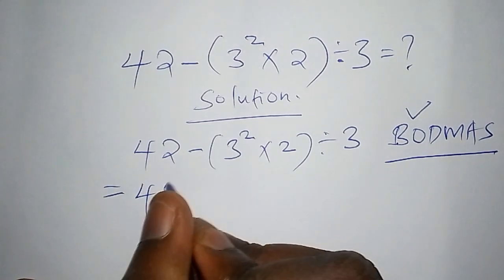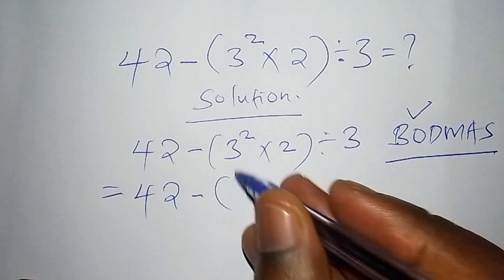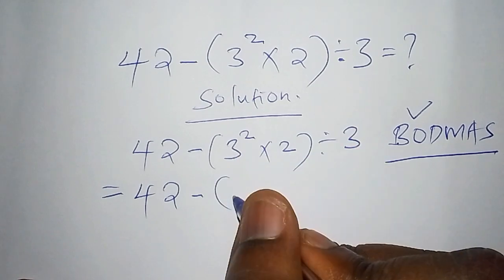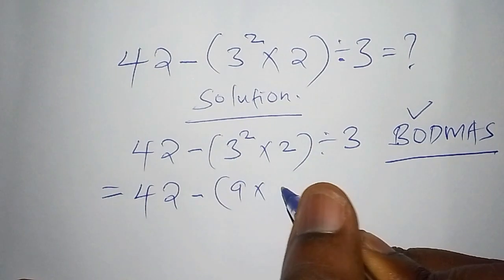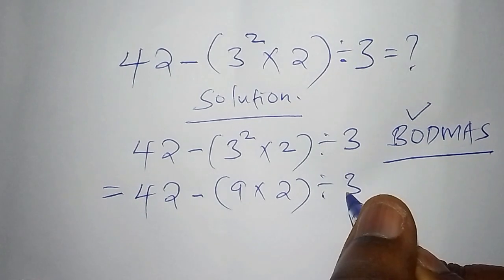So here we have 42 subtract from into bracket. 3 squared is 3 times 3. So that is 3 times 3 is 9 multiplied by 2. Then we close the bracket divide by 3.